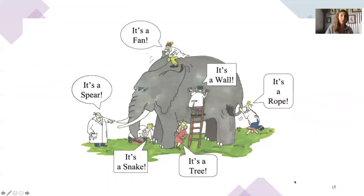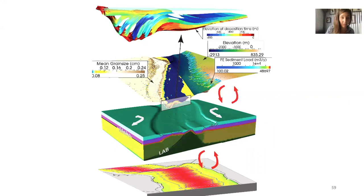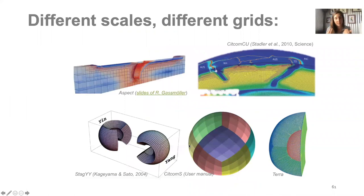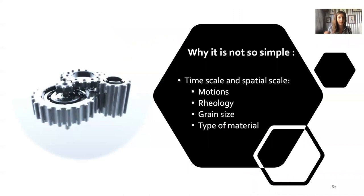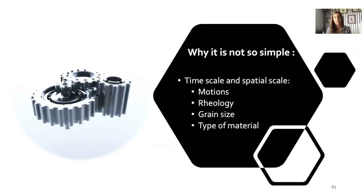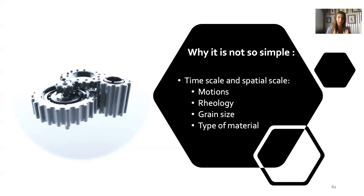Here's what the global research stream showed: different researchers working on different subjects, using different codes. One of the goals of the global research stream is to be able to use coupled models. This is exactly what we tried to achieve. We wanted to couple G-Plates reconstruction models with thermomechanical models, surface processes models, and stratigraphy models. Doing this work requires different skills, different technologies — Badlands, Underworld, G-Plates, sediment columns. Different skills also means different scales — we need to deal with different time and spatial scales, different motions, different geology, grain size, and types of material.